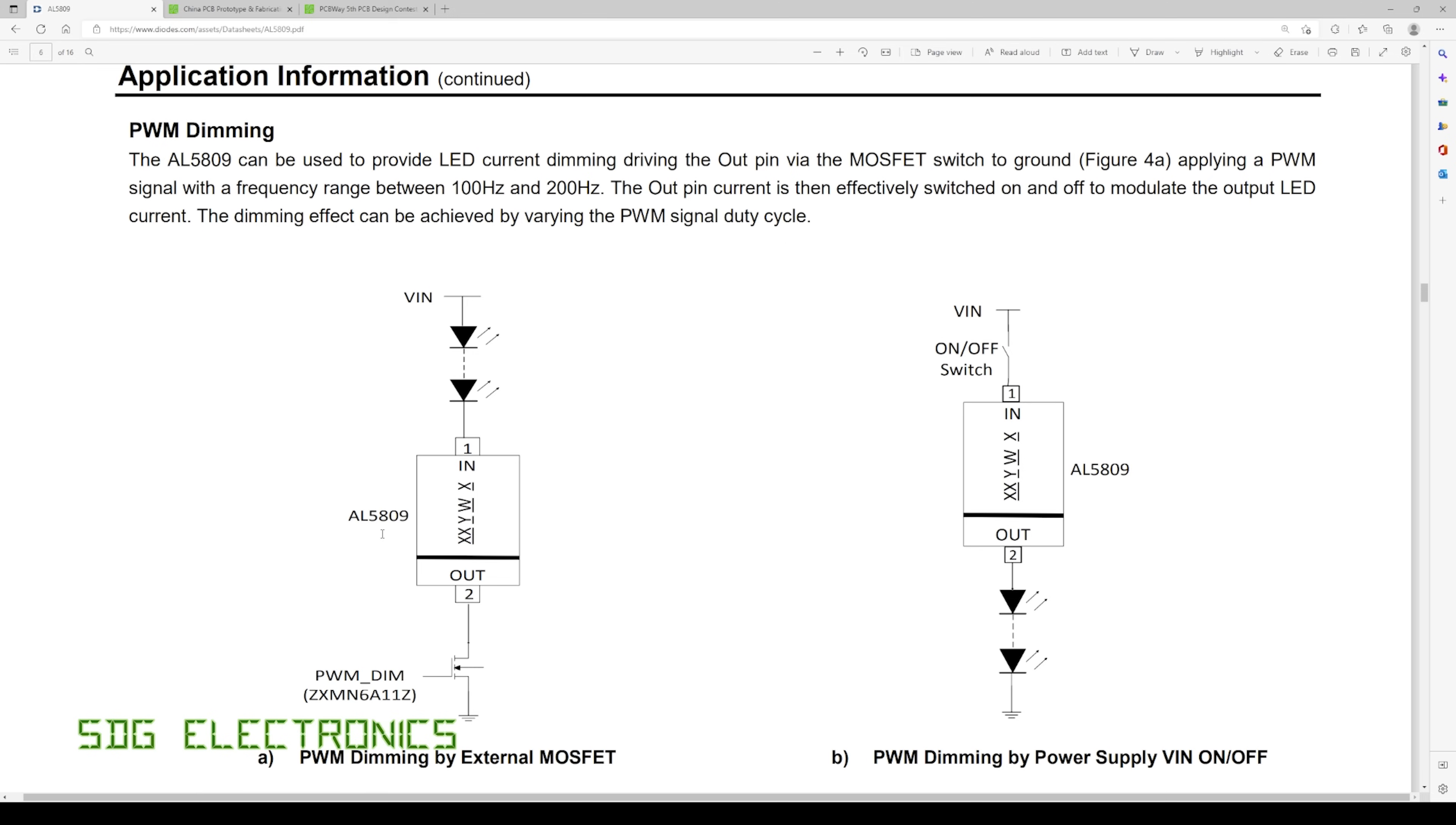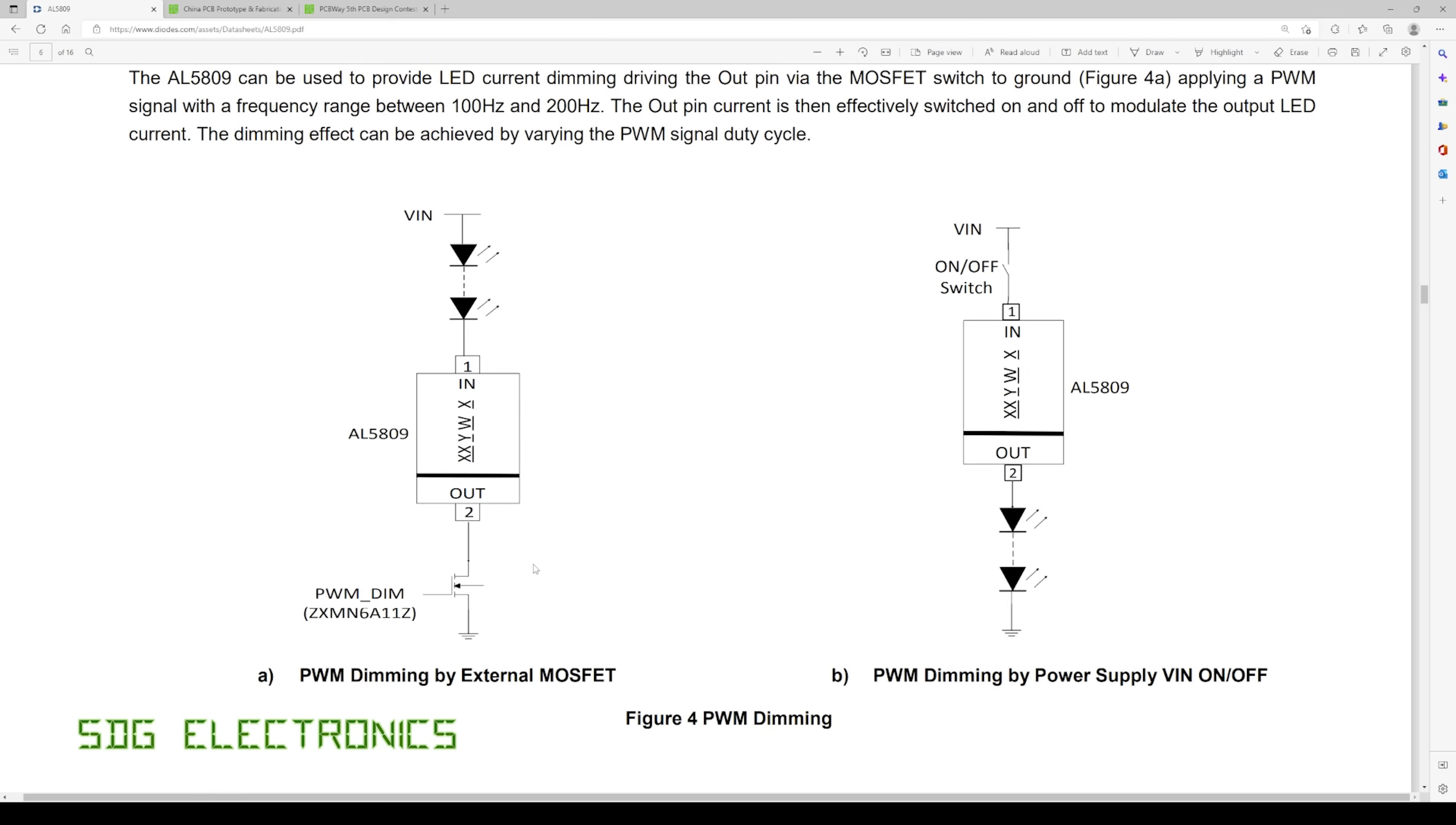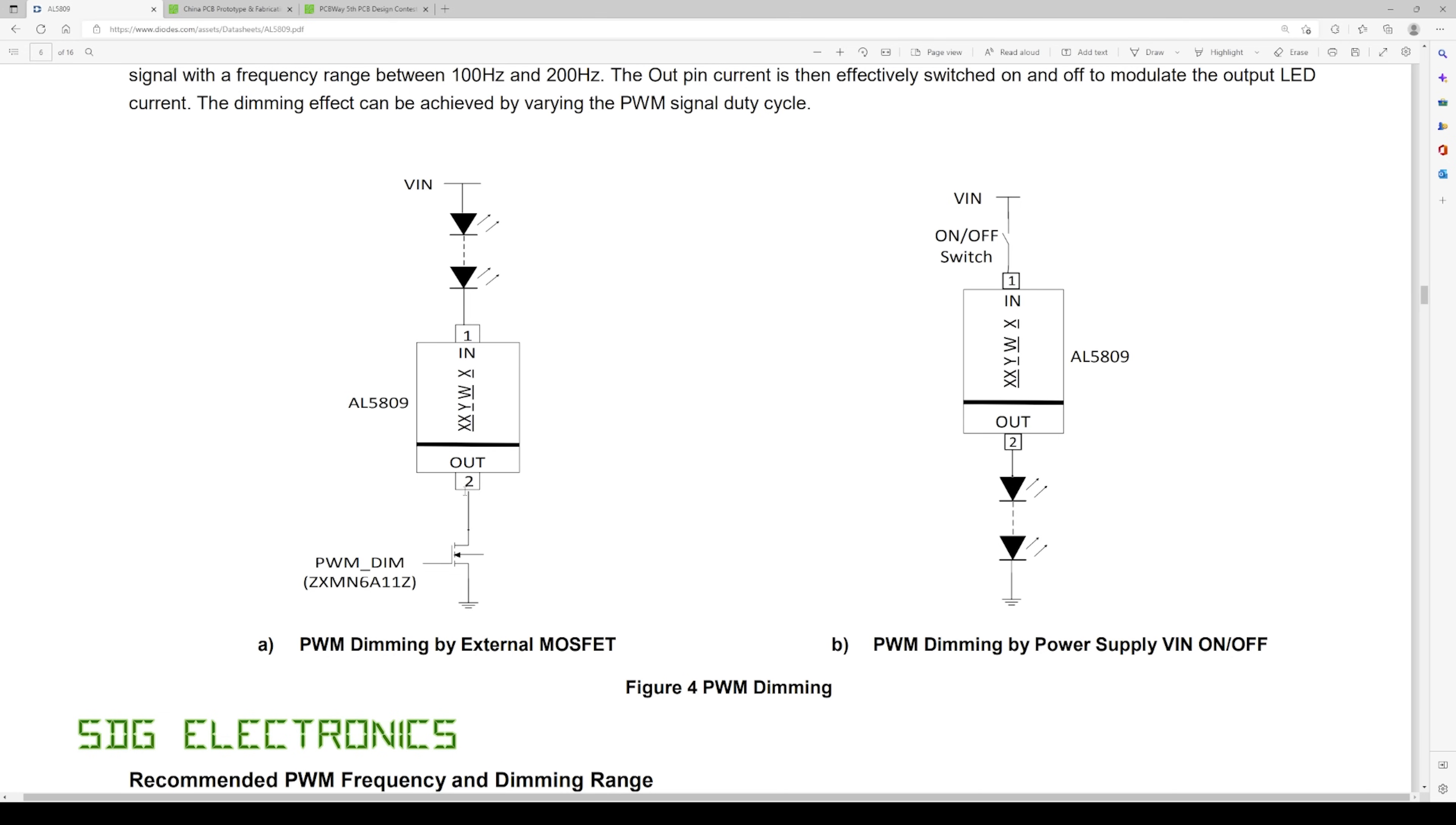I would prefer to have the PWM frequency around a kilohertz just so there's no chance of any kind of flicker. So we're going to test some of these things today but basically all you need to do is chop the incoming waveform and it will change the brightness of the LEDs.